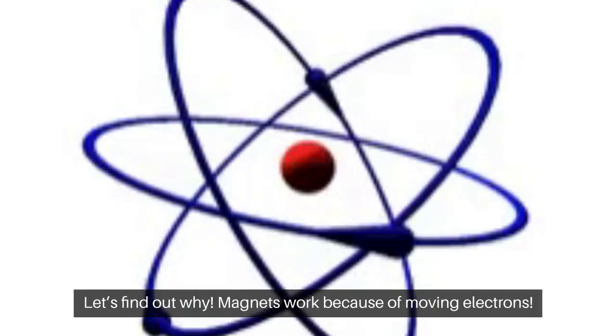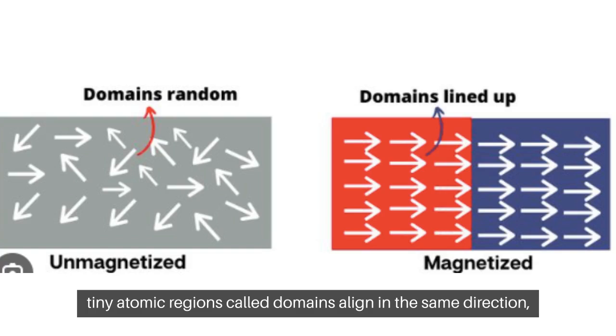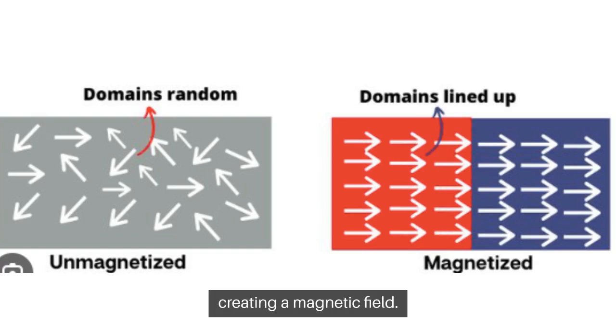Magnets work because of moving electrons. Inside every magnet, tiny atomic regions called domains align in the same direction, creating a magnetic field.